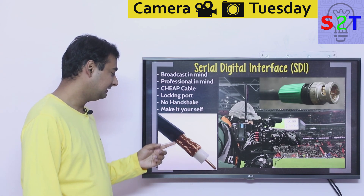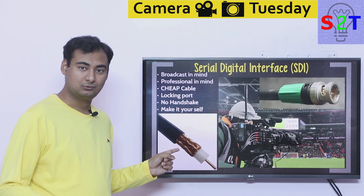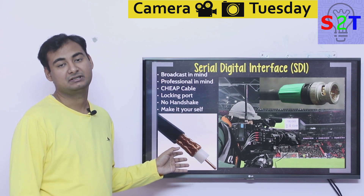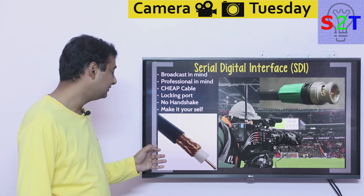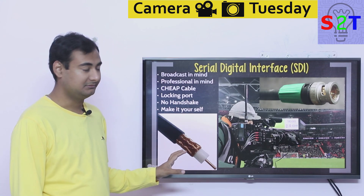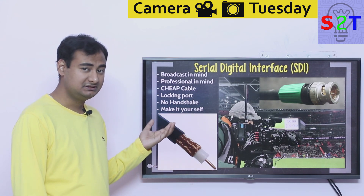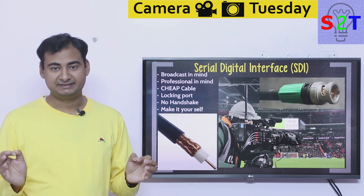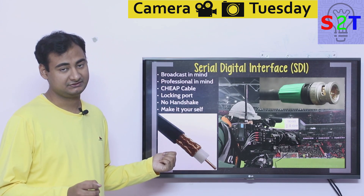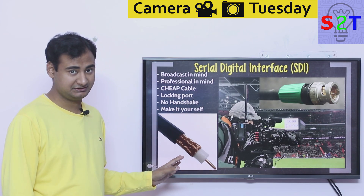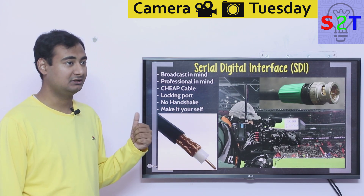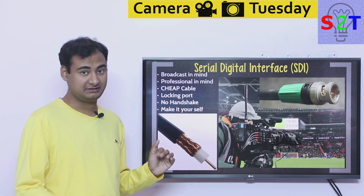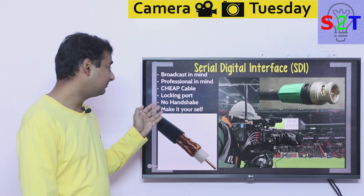This is what we call coaxial cable — the same cable that connects your dish TV to your set-top box. This is ludicrously cheap. For the cost of 10 feet of HDMI cable, you can buy 100 feet of coaxial cable. It's inherently cheap, simple, and widely accessible, which makes a very big difference especially for long cable runs.